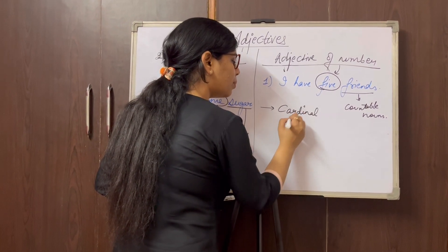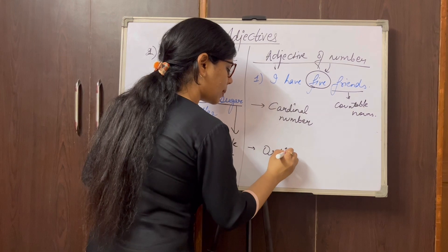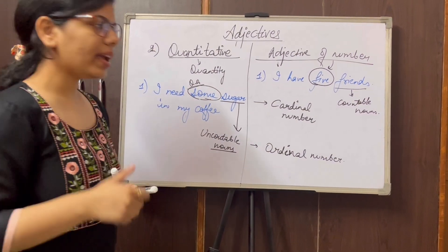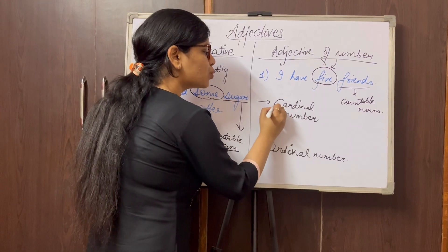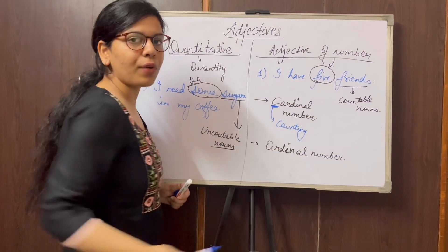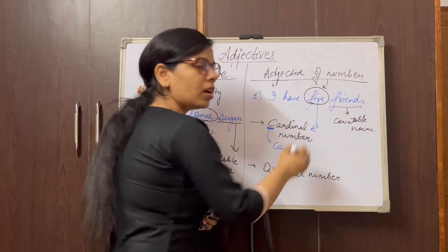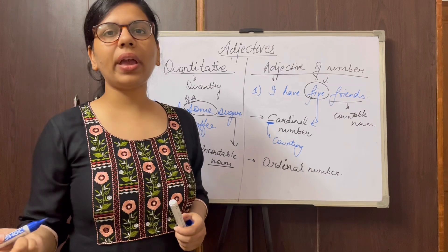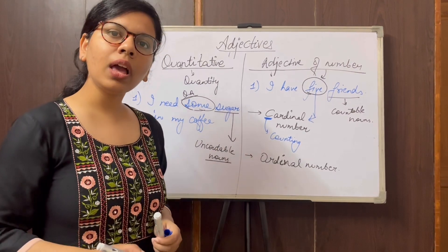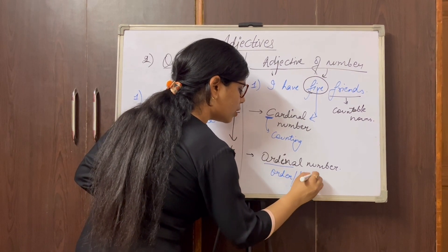To avoid confusion, you can remember a trick: cardinal number starts with the alphabet C, and C is for counting. So whenever we count — for example, I have five friends, I have counted one, two, three, four, five — this becomes an example of cardinal number. Similarly, I need two more pens: I have counted the number of pens, so 'two more pens' is also an example of cardinal number.